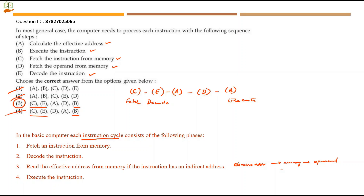With direct addressing you can fetch the operand directly from memory, but with indirect addressing you must first calculate the effective address, and only then fetch the operand from memory using that address. With this, we complete the Unit 2 questions.